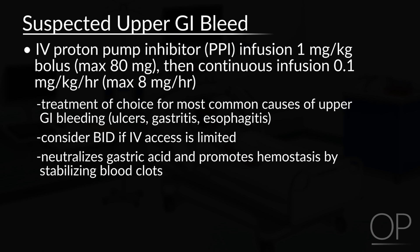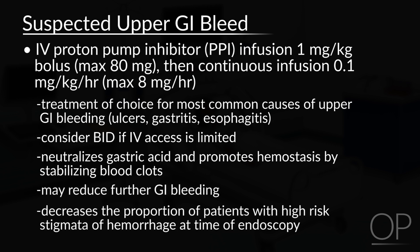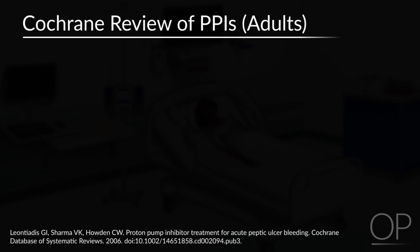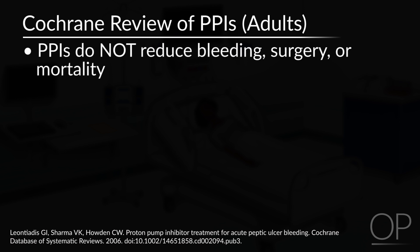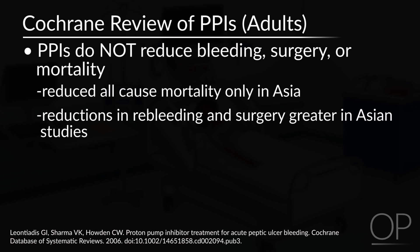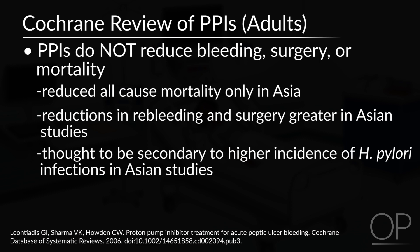PPI therapy neutralizes gastric acid and promotes hemostasis by stabilizing blood clots, which may reduce further bleeding. It has also been proven to decrease the proportion of patients with high-risk stigmata of hemorrhage at the time of endoscopy. However, a Cochrane review of PPIs in adults showed that PPIs do not reduce bleeding rates or the need for surgery or overall mortality. PPIs have been shown to be efficacious in studies looking at Asian populations, reducing all-cause mortality, with greater reductions in re-bleeding and surgery. This is thought to be secondary to the higher incidence of H. pylori infections in Asian studies.